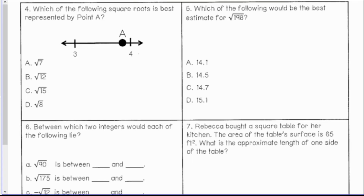Looking at number 4: which of the following square roots is best represented by point A? Point A is between 3 and 4. The square root of 9 is 3 and the square root of 16 is 4. Out of the four answer choices, the closest to 16 would be the square root of 15, so C would make the most sense.